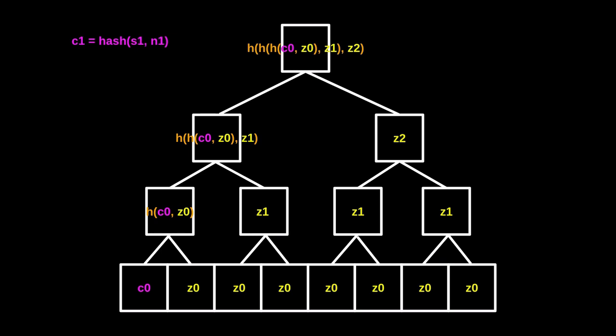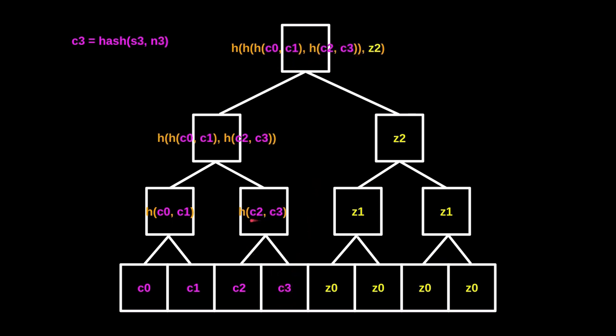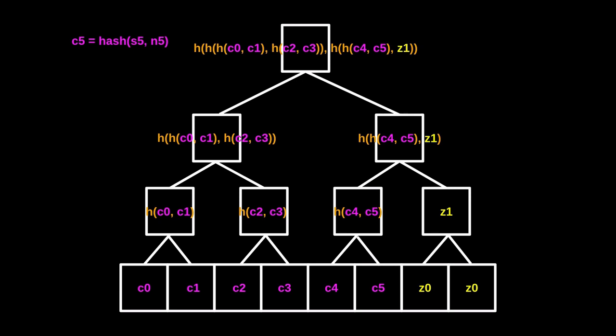When the second user deposits, they come up with a secret S1 and a nullifier N1, and the hash of S1 and N1 is named C1. C1 is inserted into the next available opening, right next to C0. We recompute the hash above, then recompute the hash at level 2, and finally recompute the Merkle root. The Merkle root changes similarly when the third user deposits — C2 is inserted, updating the hashes up to the root. Likewise for C3 and C4, each insertion updates the relevant hashes up through the Merkle root. That is how Merkle Tree insertion works in Tornado Cash.